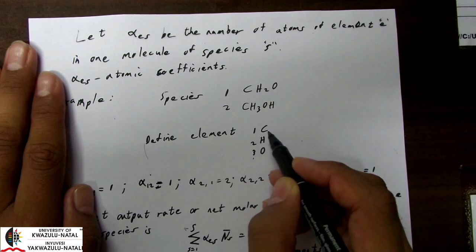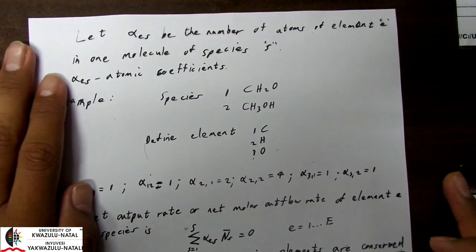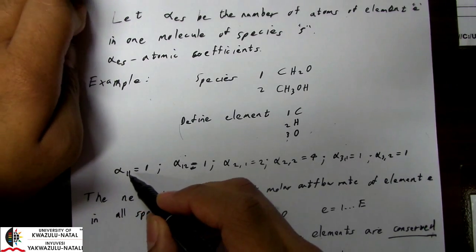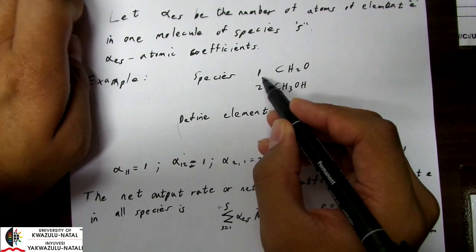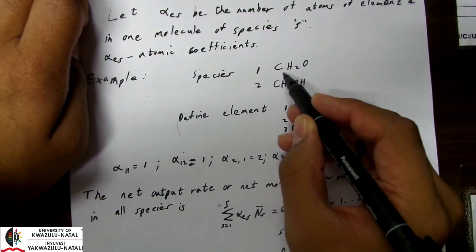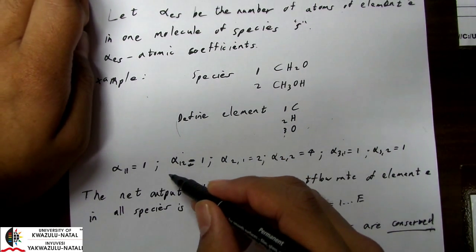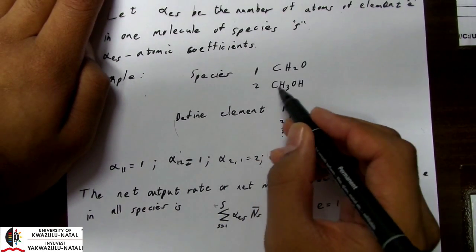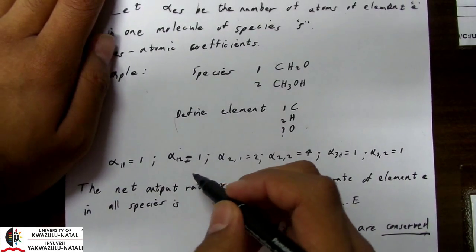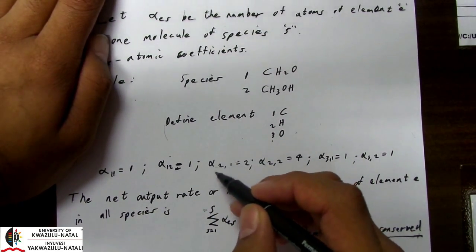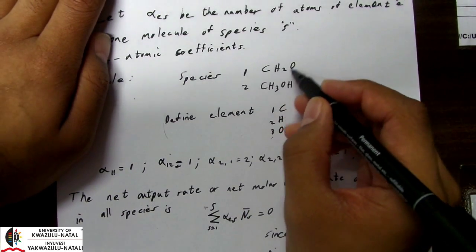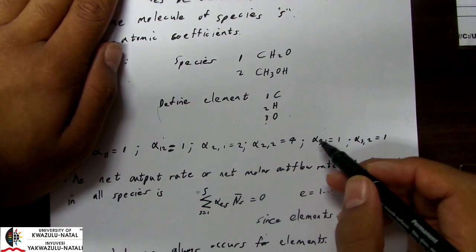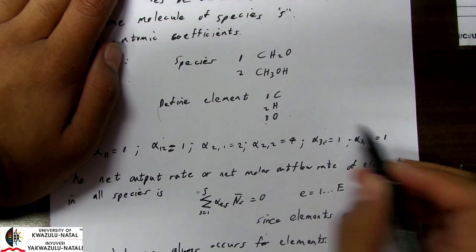Let element 1 be carbon, element 2 be hydrogen, and element 3 be oxygen. We can index alpha_11, meaning alpha of carbon in species 1 — so we have one carbon there. Alpha_12 is alpha of carbon in species 2, which is also 1. For alpha_21, the hydrogen in species 1, that's 2. And for species 2, it will be 3 plus 1, giving 4. For alpha_31, we have 1 oxygen; and alpha_32 is again 1 oxygen.